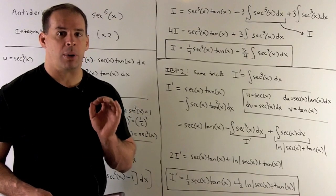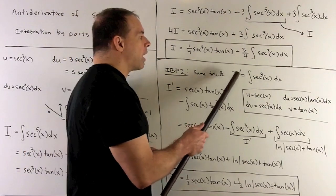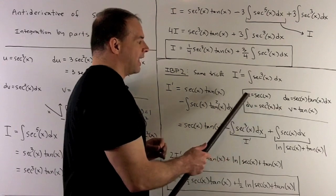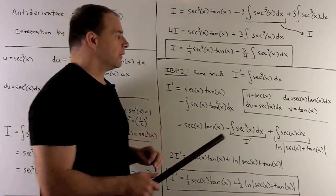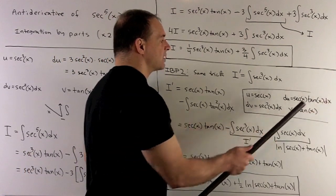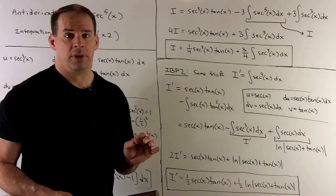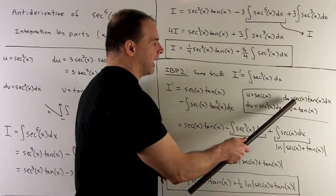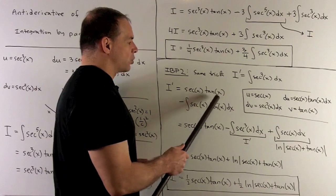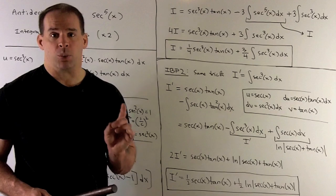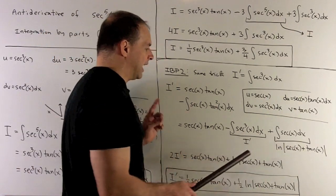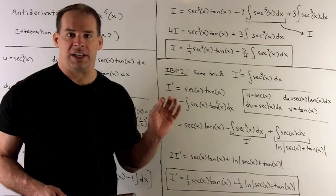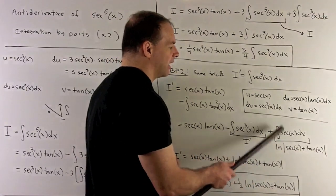For the second integration by parts, we don't change anything except the exponent. Let i prime equal the integral of secant cubed x. We set dv equal to secant squared x dx and u equals secant x, so v equals tan x and du equals secant x tan x dx. Applying the integration by parts formula: u times v gives secant x tan x, then integrate up the column and subtract, giving minus the integral of secant x tan squared x dx. Replacing tan squared with secant squared minus one, we again see i prime appear — and over here, secant drops to a power two less. Since we know the antiderivative of secant x, it's the natural log of the absolute value of secant x plus tan x.